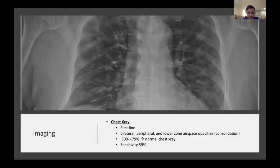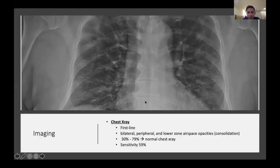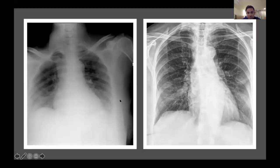Regarding imaging, chest X-ray remains the first-line modality, although it is not very sensitive — sensitivity is 59 percent, so a normal chest X-ray does not rule out COVID-19. The most common sign on chest X-ray is bilateral peripheral lower zone airspace opacities.